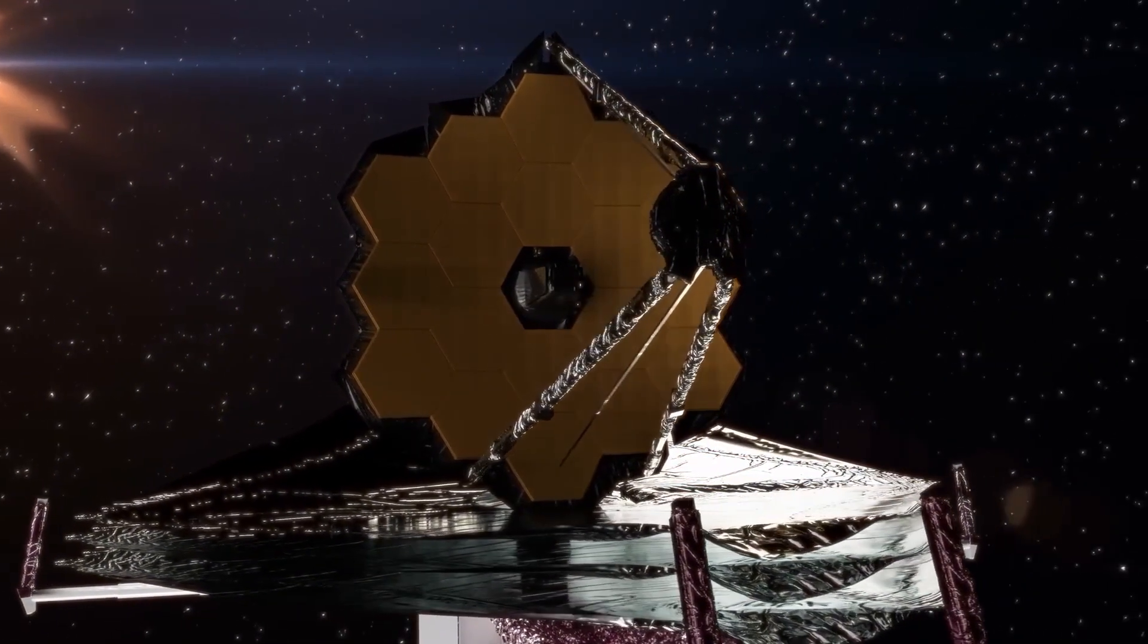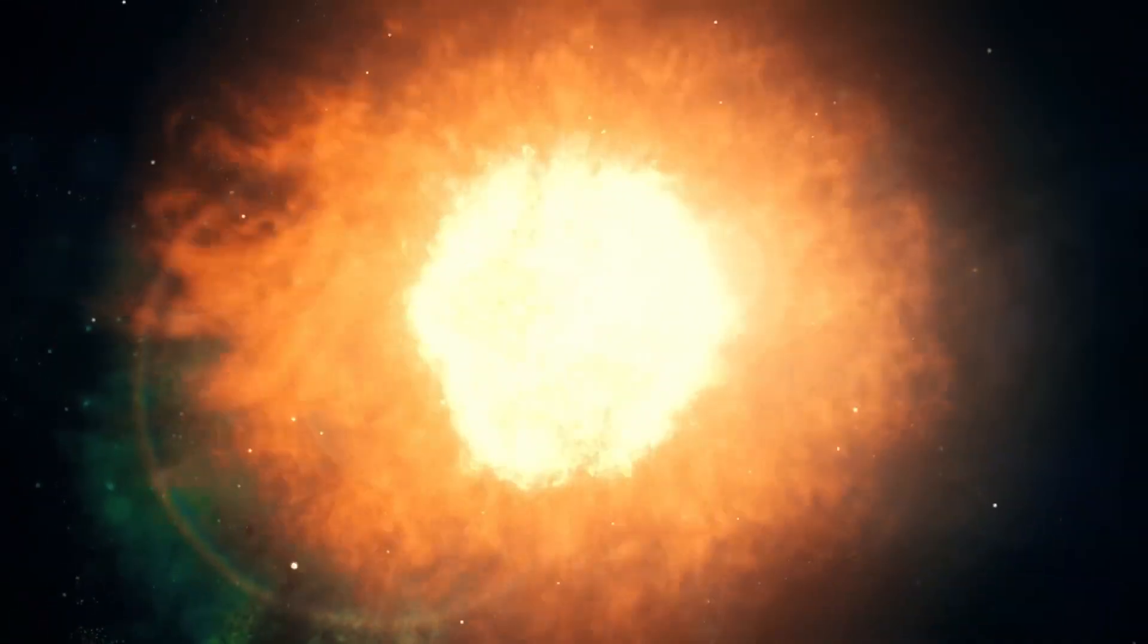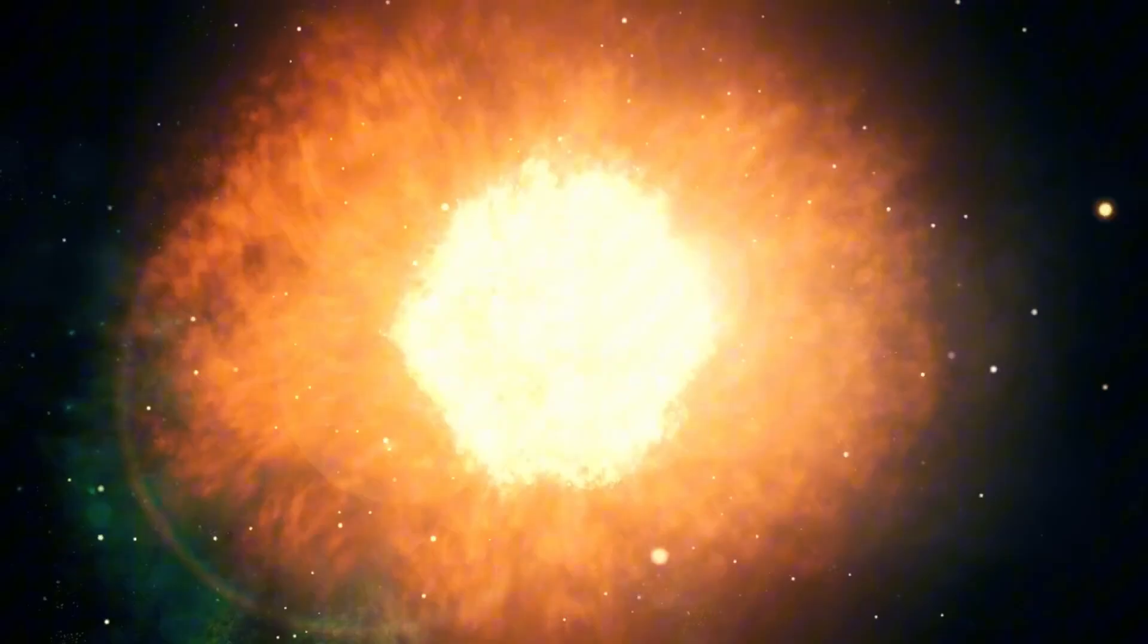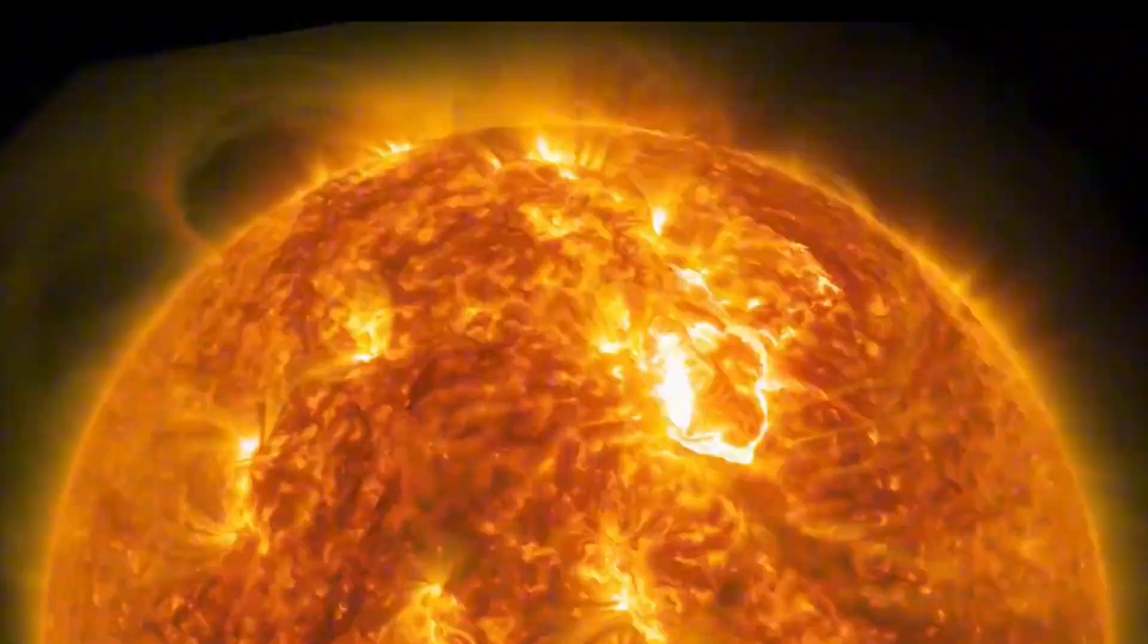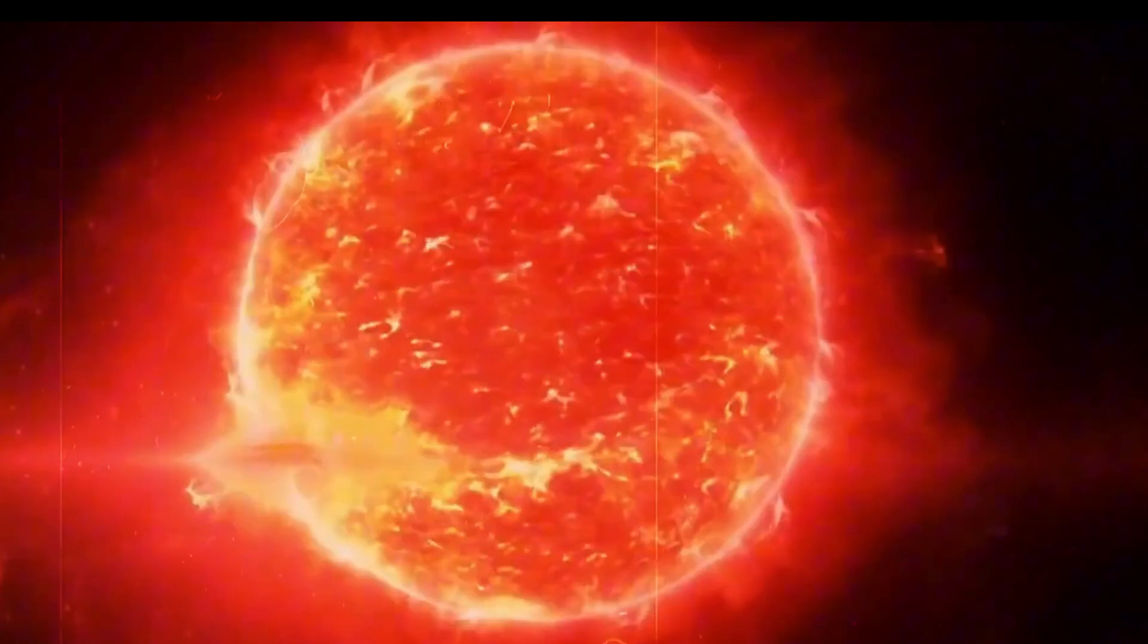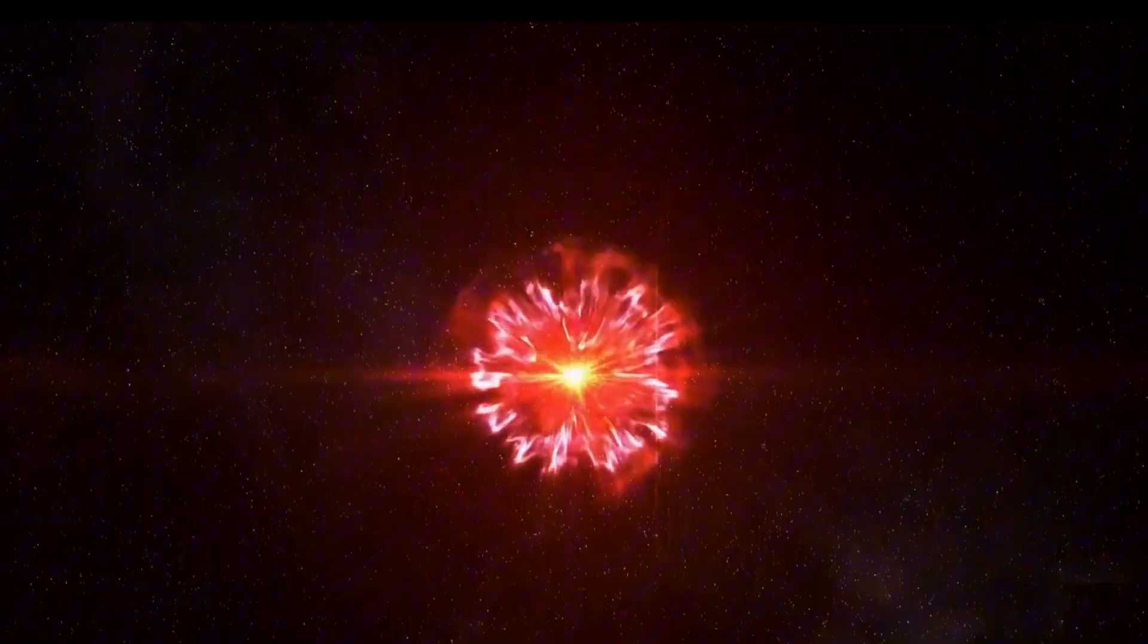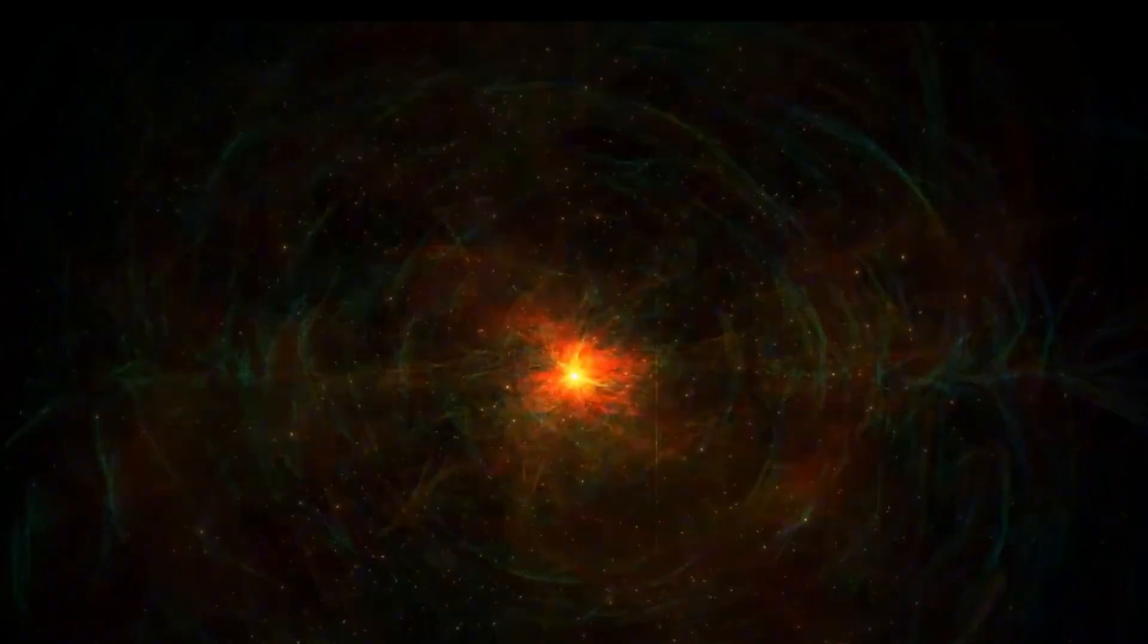A supernova explosion occurs in our Milky Way about every 50 years, however, supernovae visible from Earth only occur once every 1,000 years. Betelgeuse, which is about 640 light-years away from Earth, will be a type 2 supernova, and they are particularly spectacular.